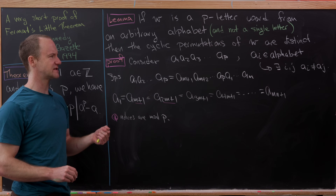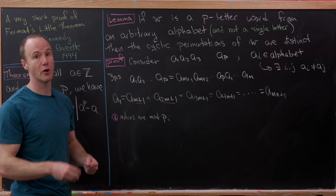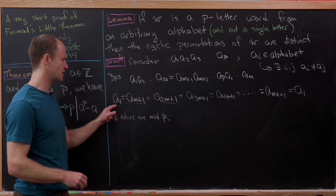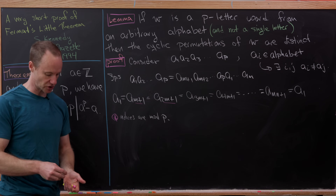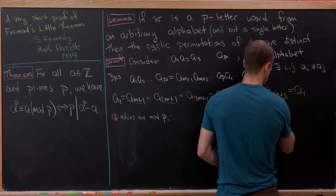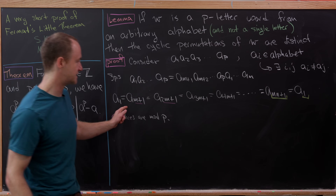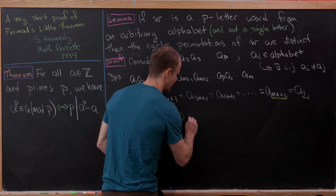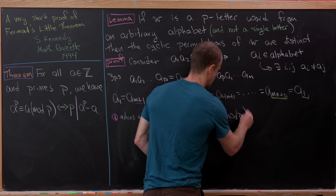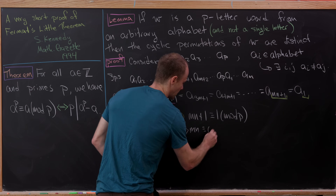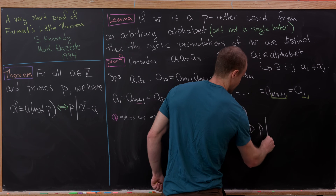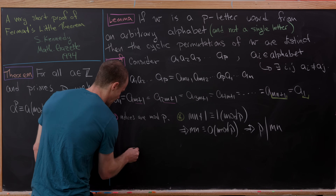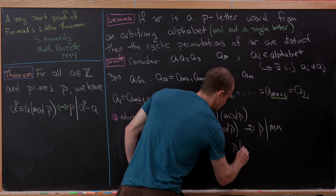So we have m·n + 1 ≡ 1 (mod p), which means m·n ≡ 0 (mod p), so p divides m·n. Since p is prime, p divides m or p divides n. But m and n are both less than p — that's clear from how m splits the word into pieces. So this divisibility gives us equality: p equals m or p equals n.